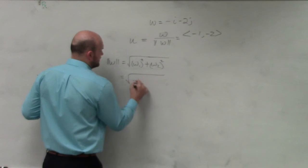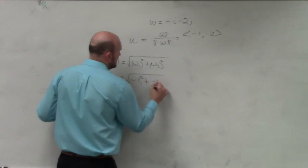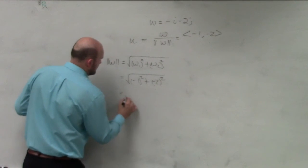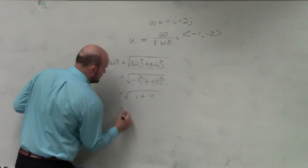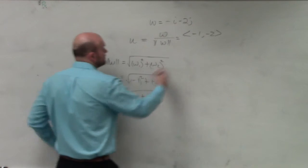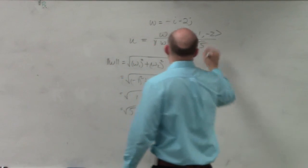So I have negative 1 squared plus negative 2 squared. 1 squared is 1 plus 2 squared is 4. So I'm left with the square root of 5.